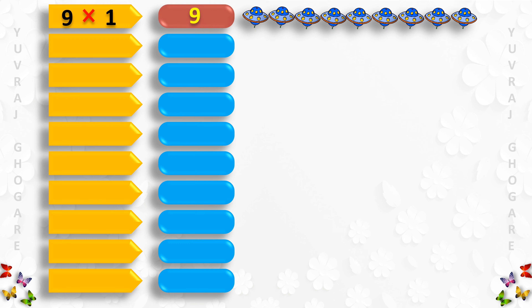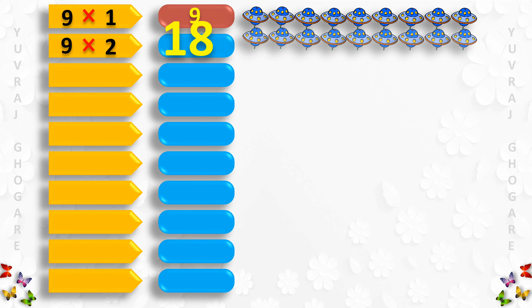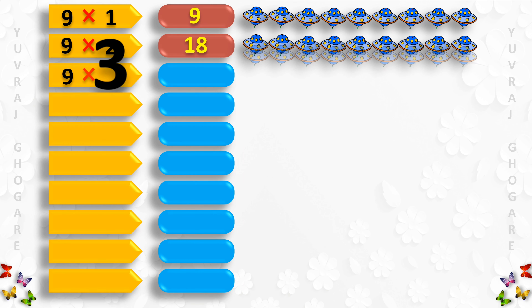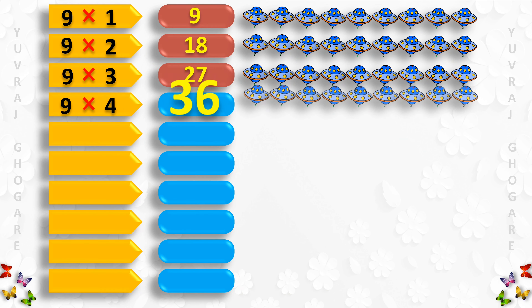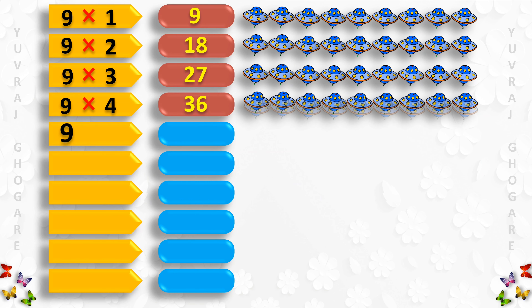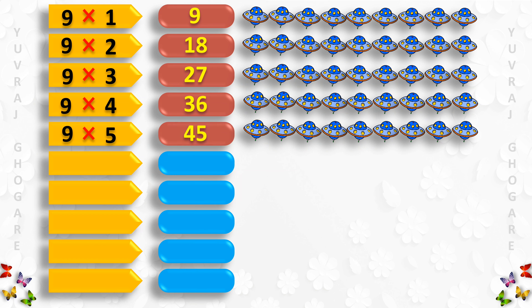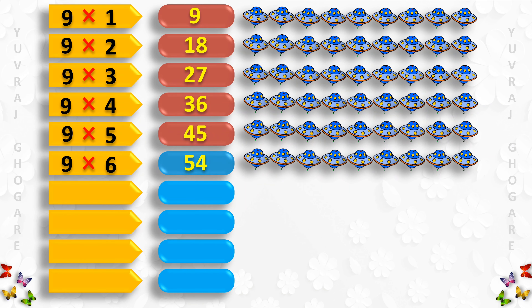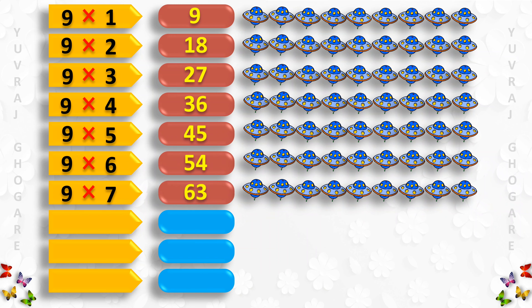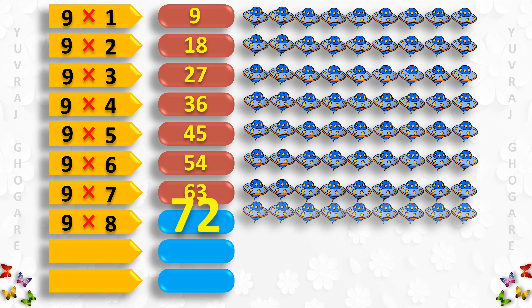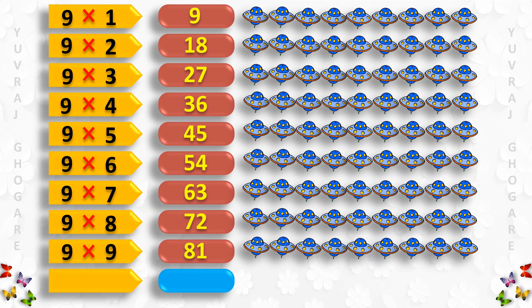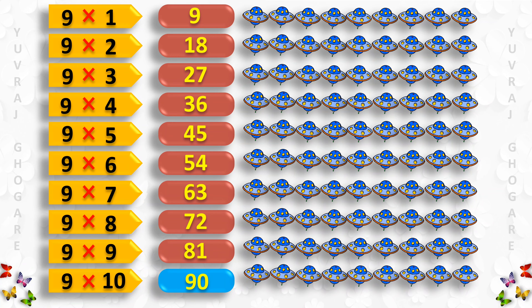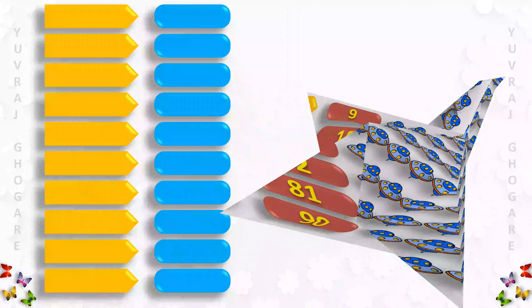Table of 9: 9 1s are 9, 9 2s are 18, 9 3s are 27, 9 4s are 36, 9 5s are 45, 9 6s are 54, 9 7s are 63, 9 8s are 72, 9 9s are 81, 9 10s are 90.